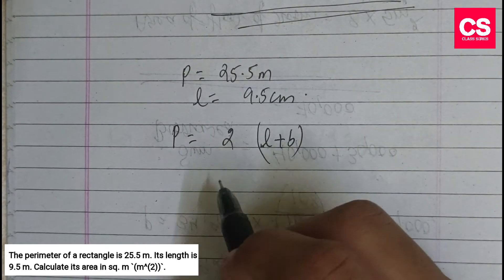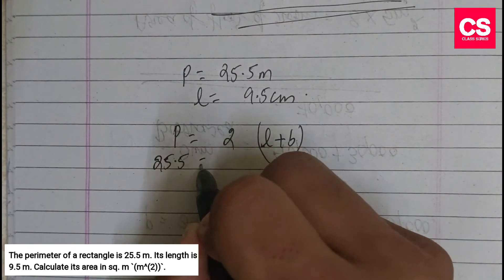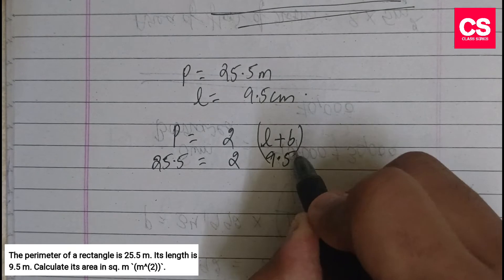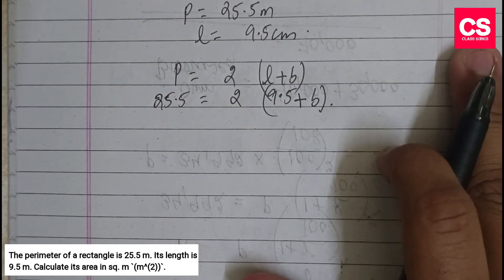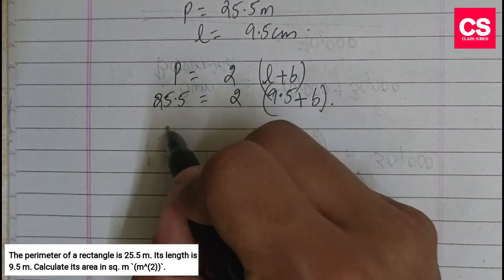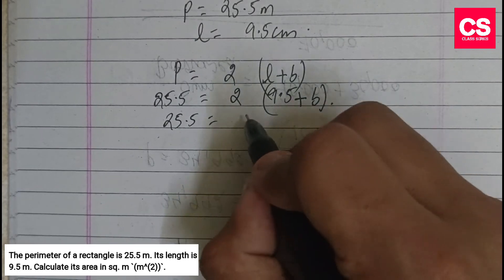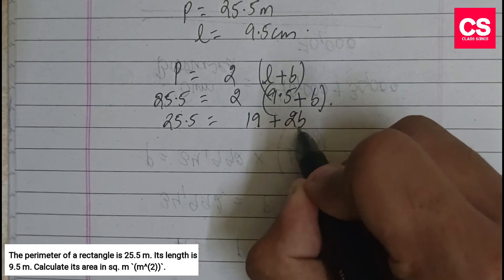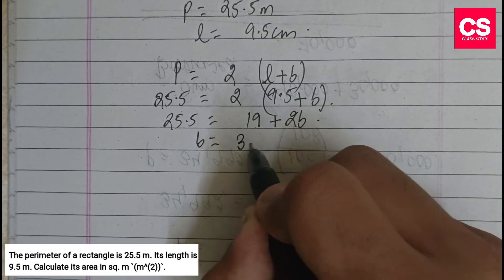Perimeter is 25.5 meters is equal to 2 into length. Length is 9.5 plus breadth. When you simplify, breadth will be equal to 3.25 meters.